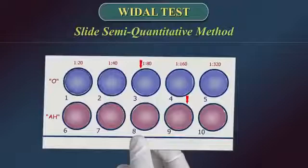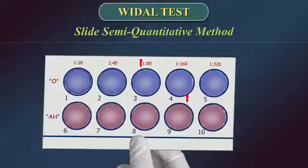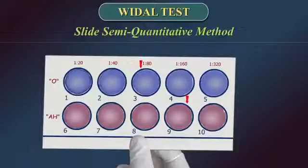Interpretation of result: Agglutination is a positive test result. The titer is reported as a reciprocal of the highest dilution which shows a positive test result.